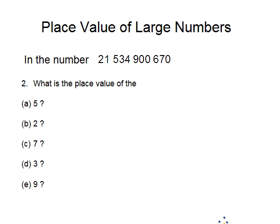Second slide. In the number 21,534,900,670, what is the place value of the 5? Before we get started, it may help if we write TH for thousands, M for millions, and B for billions. That will help us find the place value instead of having the number in a table like we did in the previous question.